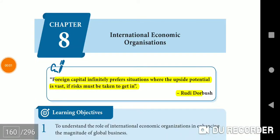Chapter 8: International Economic Organizations. Foreign capital infinitely prefers situations where the upside potential is vast if risks may be taken to get it.